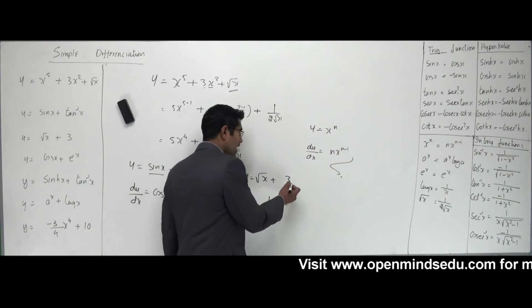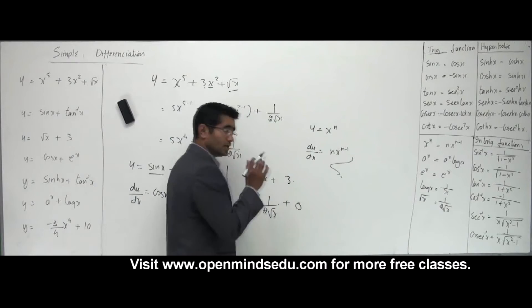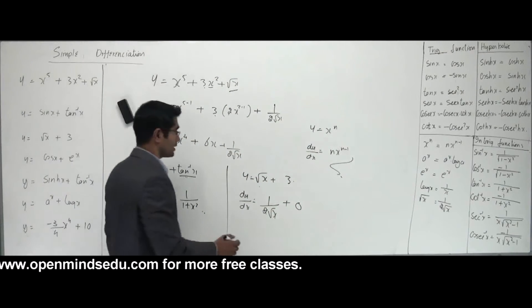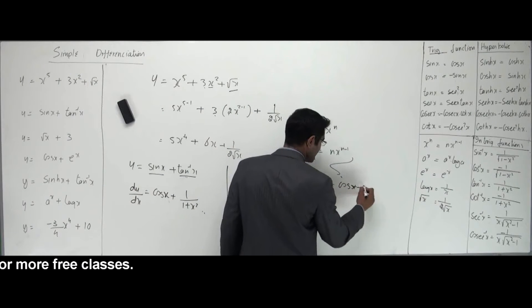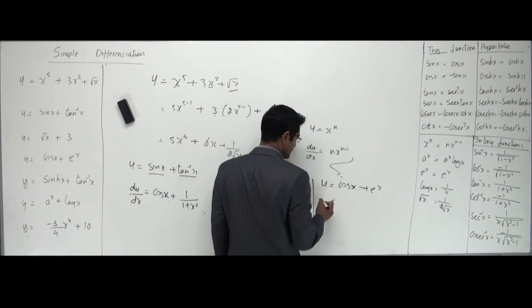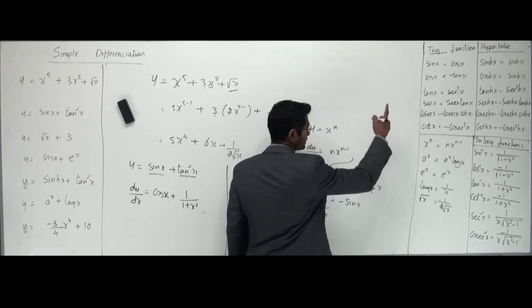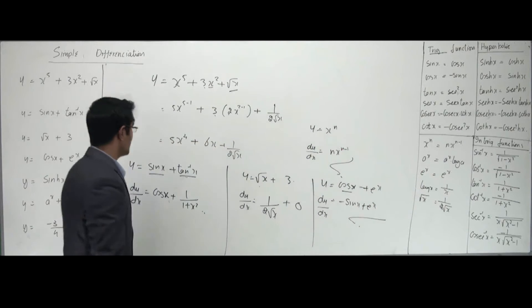Fourth one: cos x and e to the power x. Let's say y equals cos x plus e to the power x. Differentiate this. dy/dx would be: derivative of cos x is minus sin x, and e to the power x is e to the power x itself. Plus e to the power x. That's your answer.